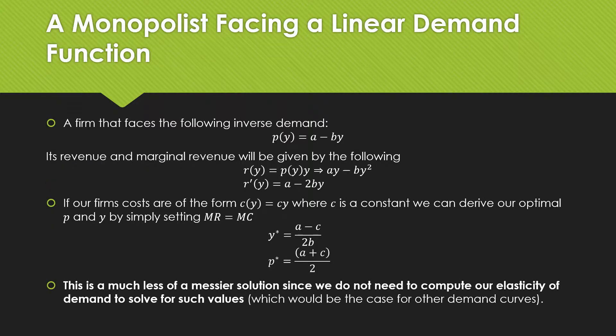A firm that faces the following inverse demand, p(y) = a - by where a and b are constants, its revenue and marginal revenue will be given by the following equations. If our firm's costs are of the form c(y) where c is a constant, we can derive the optimal p and y by simply setting our marginal revenue equal to our marginal cost. This is much less of a messier solution since we do not need to compute our elasticity of demand for such values, which would be the case when dealing with other demand curves.